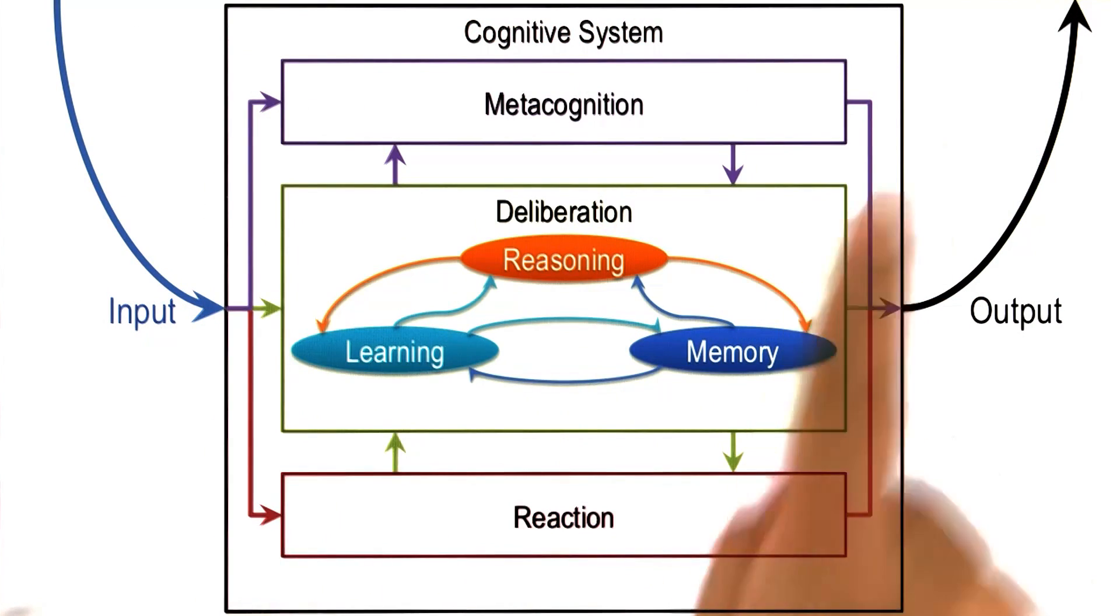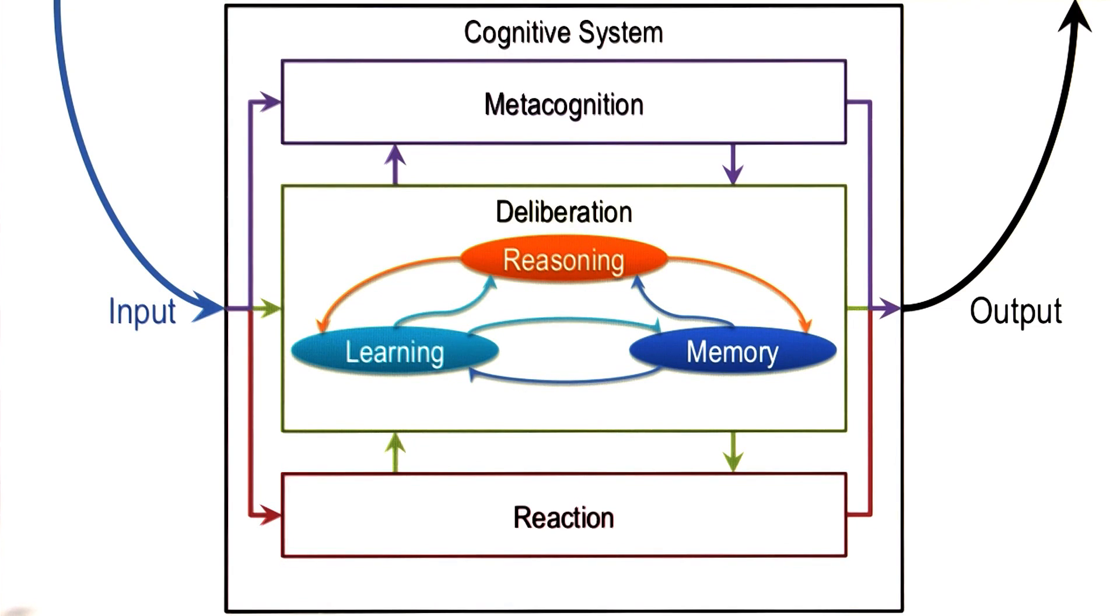Secondly, you may recall this particular figure for the cognitive architecture that we had drawn earlier. You may see that reasoning, learning, and memory are closely connected, and all of that is occurring in the service of action selection.